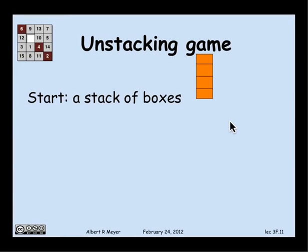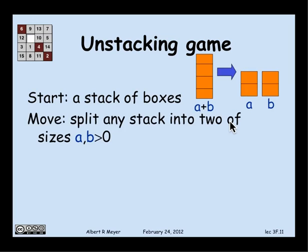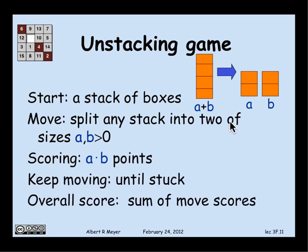All right. Let's look at another example. This is a game that we used to play in class. You start off with a stack of blocks, say 10 blocks. And you're allowed to make a move that consists of splitting the stack into two smaller stacks. So if the stack has height A plus B, you can split it into a stack of height A and a stack of height B. And you get a score for that move. The score is A times B. And then you keep doing that until you can't make any more moves. That is, when all you have left are stacks of height 1, which you can't split anymore. And then your overall score is the total that you got for all the moves that you made until that point.